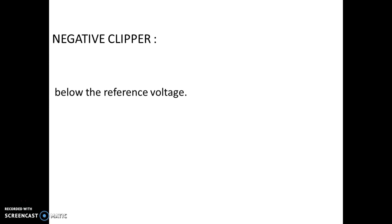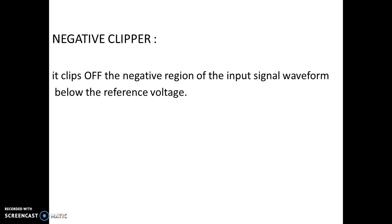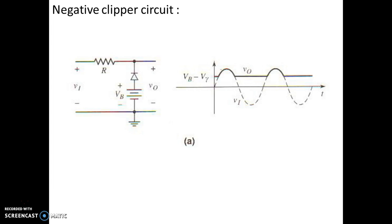Next we will see the negative clipper. The negative clipper clips off the negative region of the input signal below the reference voltage. Here there is a circuit for the negative clipper.